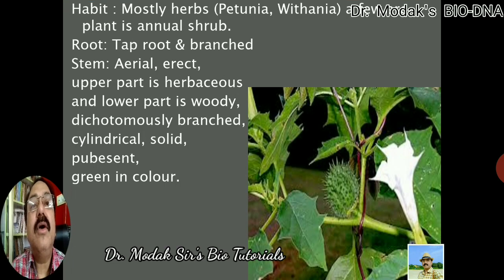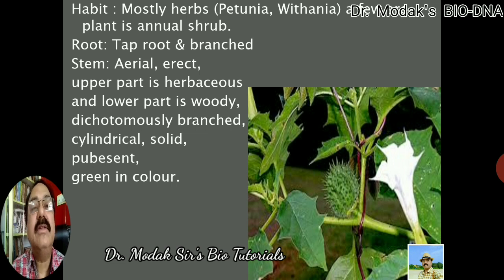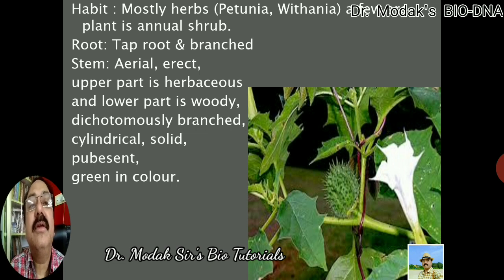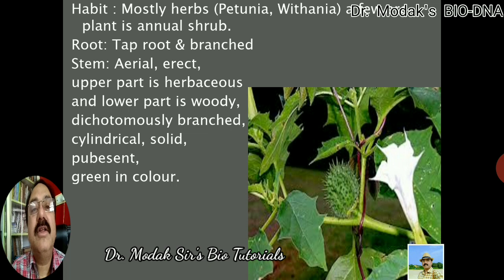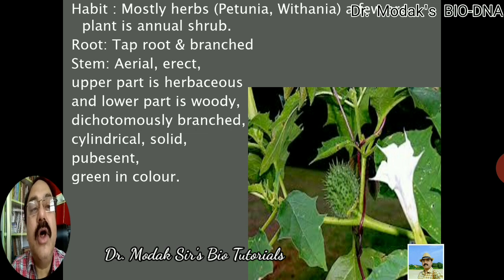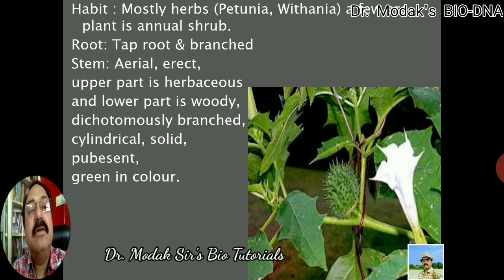The habit of plants like Petunia and Withania is herbaceous, while other plants are shrubs. Being a dicotyledonous plant, the taproot system is more commonly present but it is highly branched. The stem is aerial and erect; the upper part of the stem, as seen in the diagram of Datura, is herbaceous and green, while the lower part is woody. It is highly branched — at every node two branches are present — and therefore it is called dichotomous branching. The stem is cylindrical, solid, pubescent with thick hairs, and green in color.